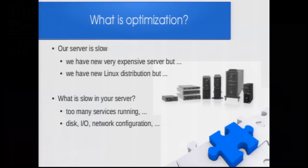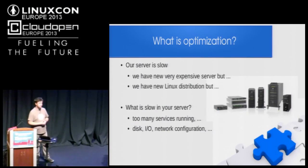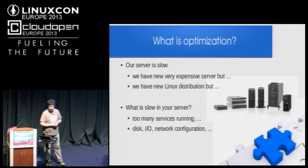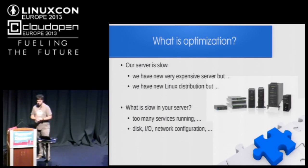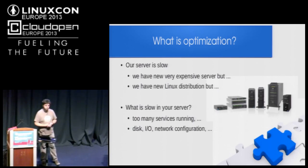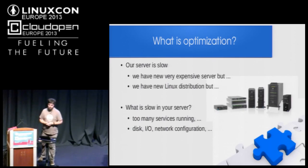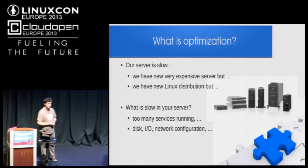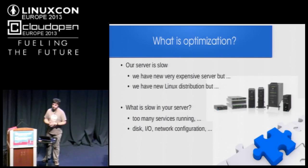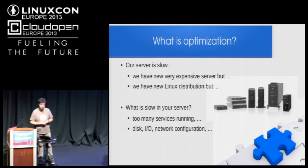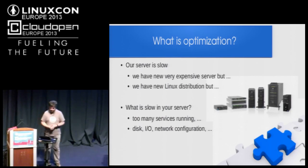What is optimization? When our server is slow — we bought a new, very expensive server, but it's not what we want. The server is always slow. We must determine what is slow. Maybe too many services are running, maybe something is wrong with disk drives, with I/O, with network configuration. Then we must do TCP tuning, network tuning, disk tuning, memory tuning, and disable unneeded services.